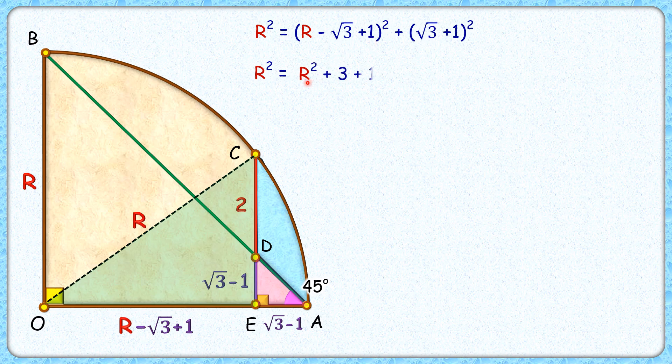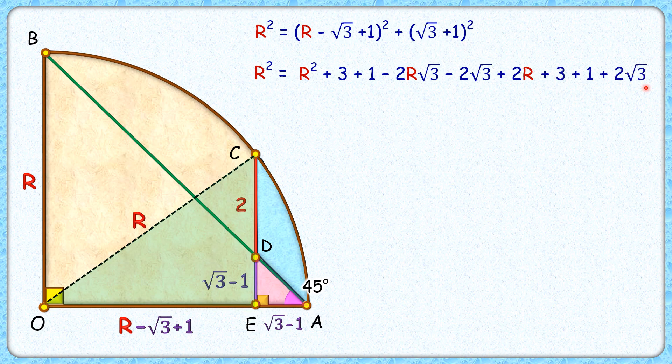That will be a squared plus b squared plus c squared minus 2ab minus 2bc plus 2ac. The second term opening up with a plus b whole squared formula will get this. Now simplifying it, we can clearly see R squared is getting canceled. This is minus 2 root 3, this is plus 2 root 3.